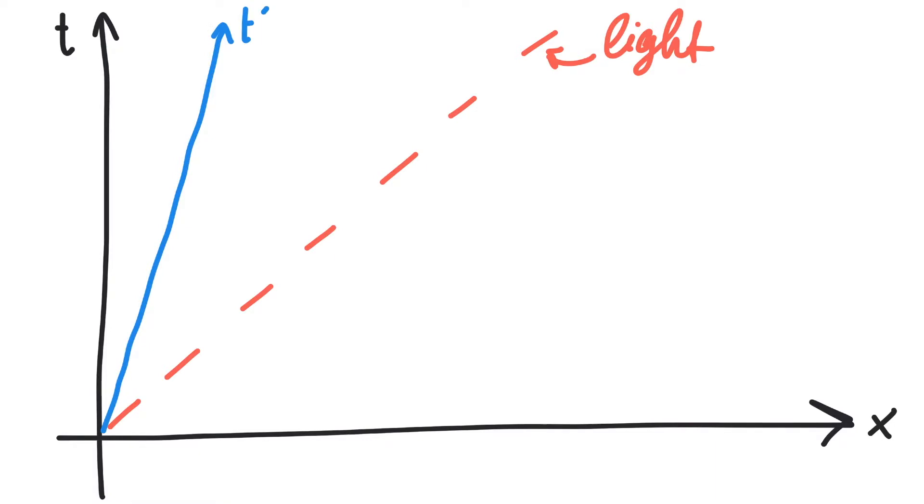What does his space axis look like? One could guess that the axes of a moving observer are just rotated a little bit. In our coordinate system, the light world line is the one where one tick of time corresponds to one tick of space.